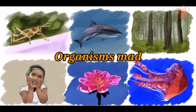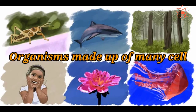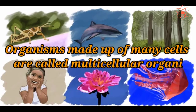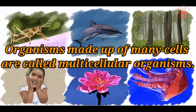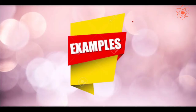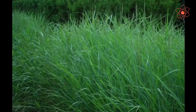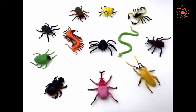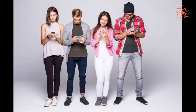Living organisms which are made up of many cells are called multicellular organisms. For example, trees, grasses, insects and human beings.